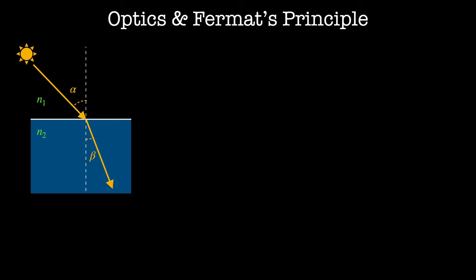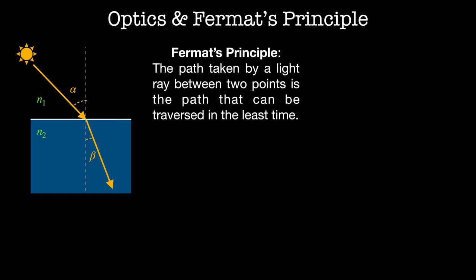Air and water have two different indices of refraction. Fermat's principle, or the principle of least time, states that a path taken by a light ray between two points is the path that can be traversed in the least time.